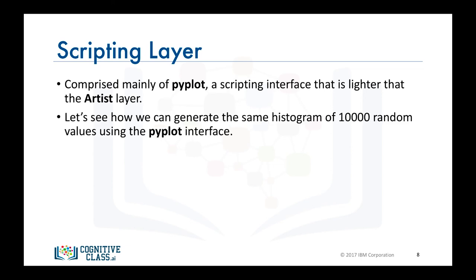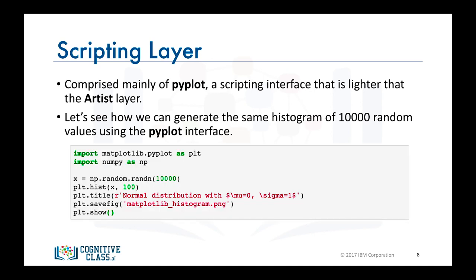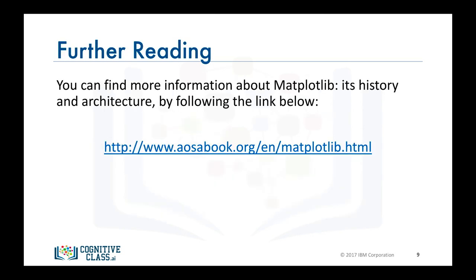Let's see how the same code used earlier with the artist layer to generate a histogram of 10,000 random numbers would now look like. First, we import the pyplot interface, and you can see how all the methods associated with creating the histogram and other artist objects and manipulating them — whether it is the hist method or showing the figure — are part of the pyplot interface. If you're interested in learning more about the history of Matplotlib and its architecture, this link will take you to a chapter written by the creators of Matplotlib themselves. It is definitely a recommended read.